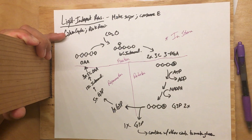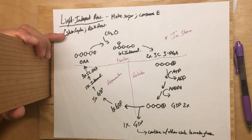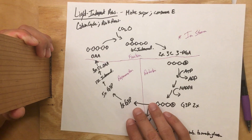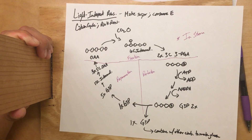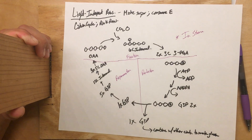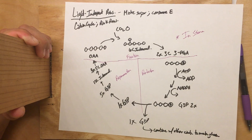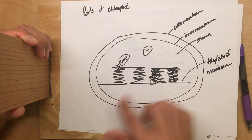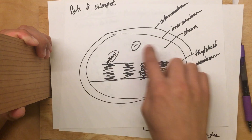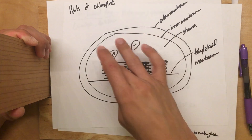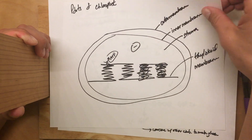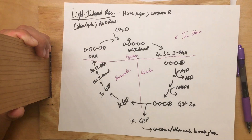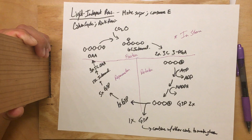All of this is happening out in the stroma. The stroma is that empty space surrounding the thylakoid membrane. So when this is your chloroplast, the stroma is the empty space around the thylakoid, and all of these enzymes are floating around inside that empty space creating G3Ps, which then combine to form glucose or sucrose or whatever else might be needed.